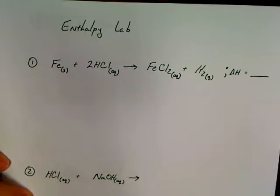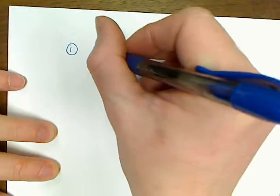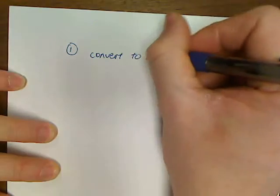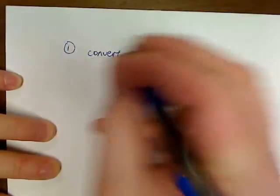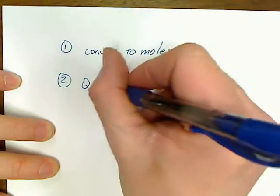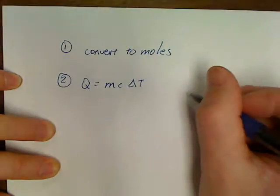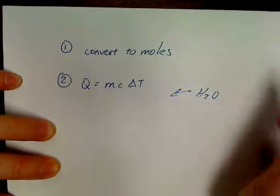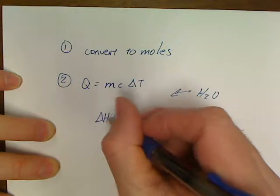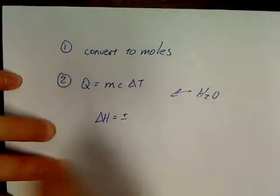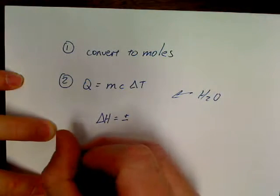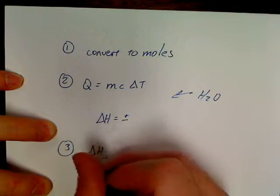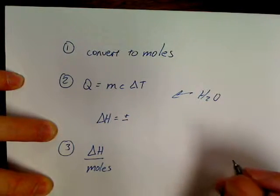Now, you've done problems like this before - the three-step problems. Step number one, you had to convert to moles. And then step number two, you did Q equals MC delta T, and this second part had to do with water. And then whatever you got for Q, delta H was the opposite value. And then step number three, we just took delta H and we divided it by our moles.